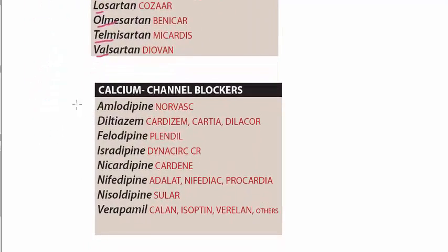And in the calcium channel blockers we have dihydropyridines, the -dipines. In the -dipines we have amlodipine, felodipine, isradipine, nicardipine, nifedipine, and nisoldipine. And in addition to these -dipines we have two more drugs.